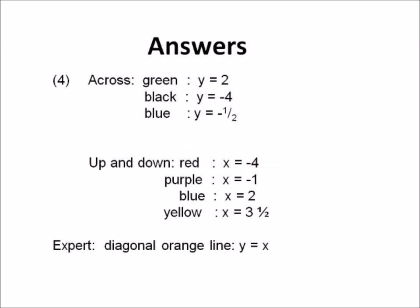Here are your answers. Across: the green line y = 2, the black y = -4, the blue y = -½ — halfway between zero and one. Up and down: the red x = -4, the purple x = -1, the blue x = 2, the yellow x = 3½. The expert one — the diagonal orange line — was y = x. That was a bit tough. Hope you got all of those.